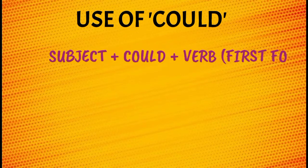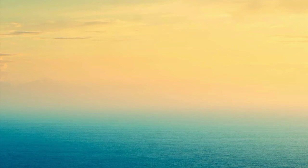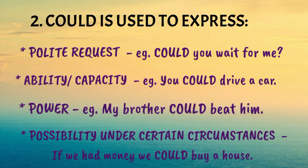Use of Could: In a sentence, first write the subject, then could, then the first form of verb. Could shows past condition — you could pass the exam. Could is used to express polite request — could you wait for me? Ability or capacity — you could drive a car. Power — my brother could beat him. Circumstances — if we had money, we could buy a house.